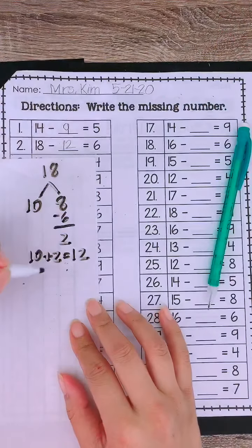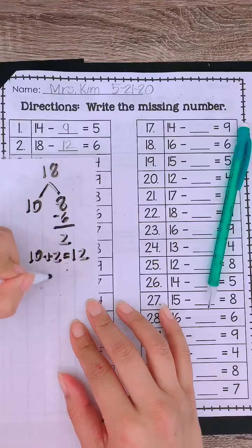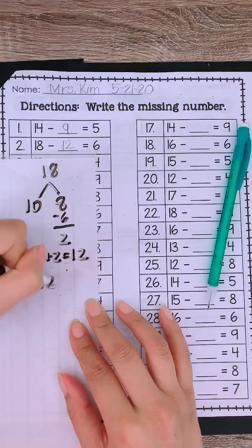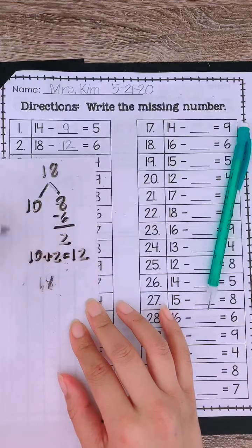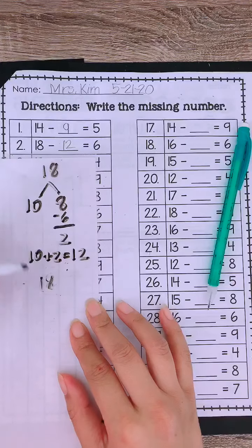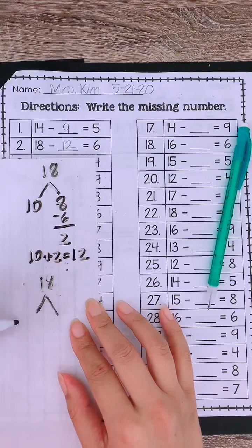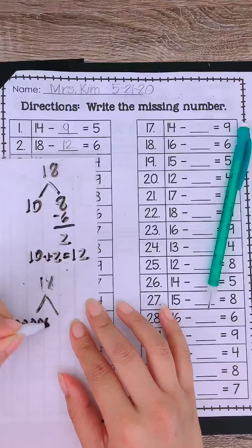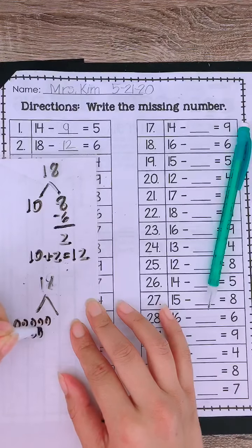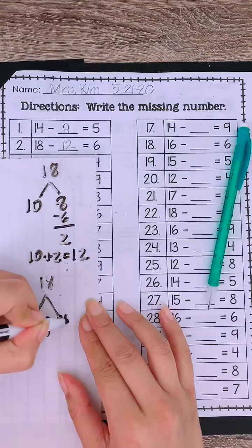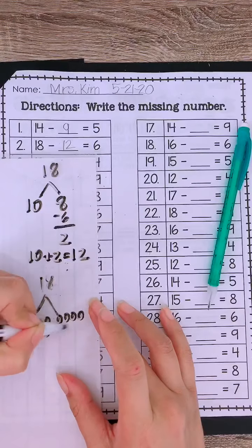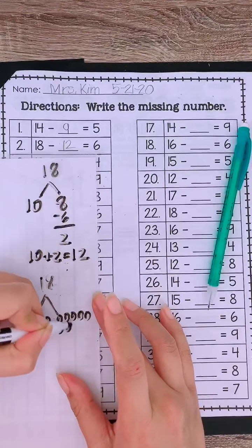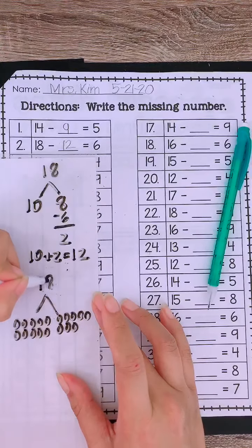We can also do it with my circles. So you have 18. And we have 1, 2, 3, 4, 5. 1, 2, 3, 4, 5. And then 1, 2, 3, 4, 5, 6, 7, 8. Because we have 18 that we need to make.